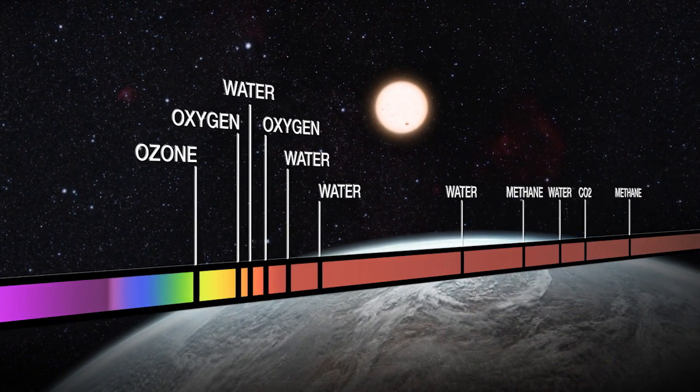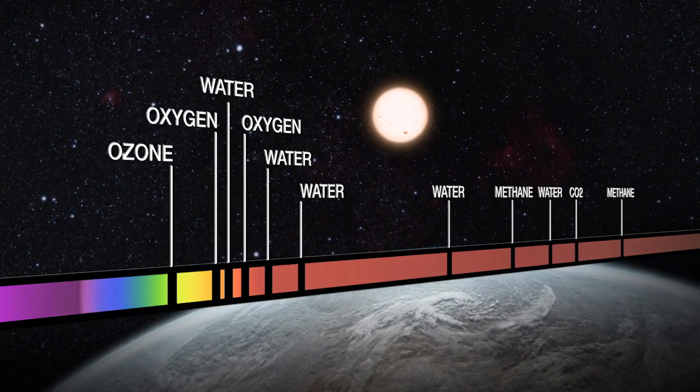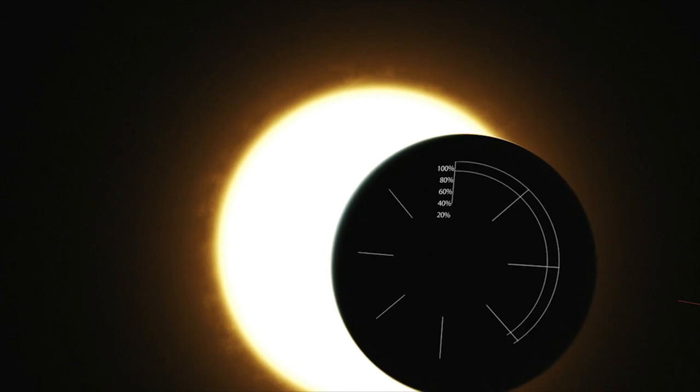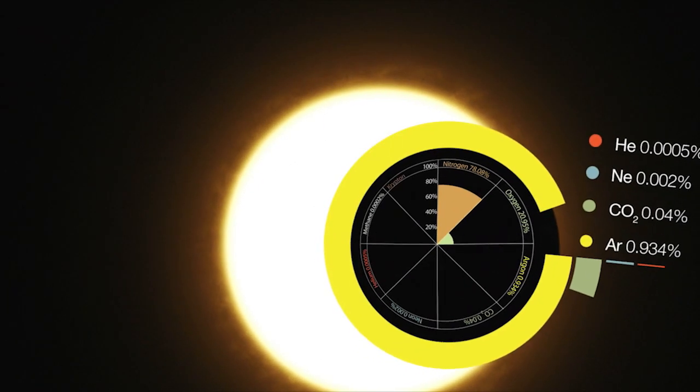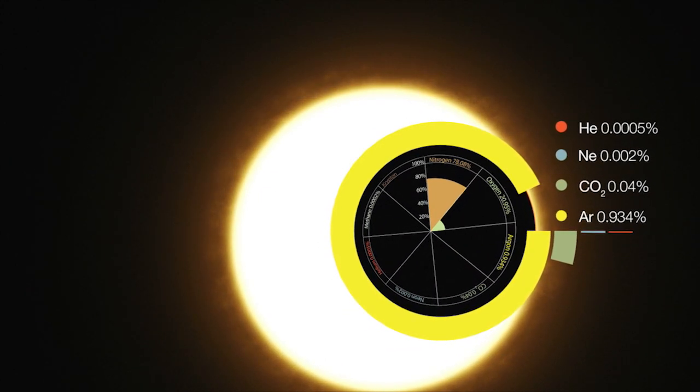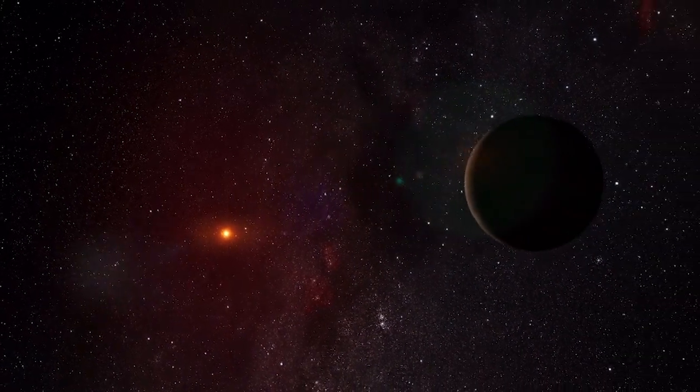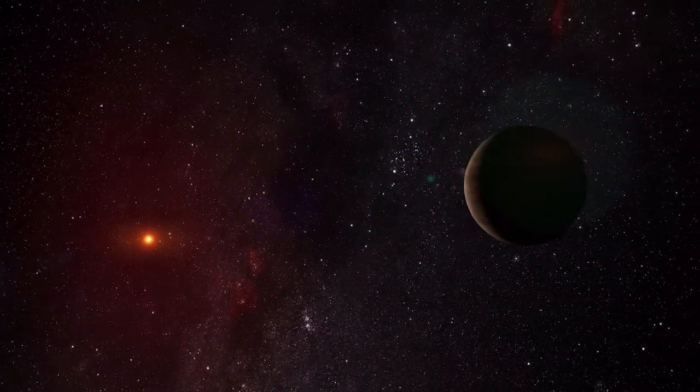Also, the stronger the line, the more of the corresponding element is present in the atmosphere. But even the strongest lines of the most abundant elements are incredibly weak and hard to detect. Only a tiny fraction of the star's light is interfering with the atmosphere of the exoplanet.